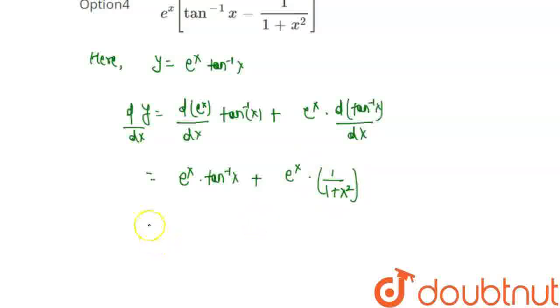Now, you can take e to the power x common here. e to the power x times tan inverse x plus 1 upon 1 plus x square. Okay, this equals dy by dx.